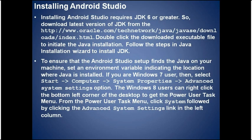Let us learn to install Android Studio. Installing Android Studio requires JDK 6 or greater, so download the latest version of JDK from the oracle.com site. Double-click the downloaded executable file to initiate the Java installation and follow the steps in the Java installation wizard. To ensure Android Studio setup finds Java on your machine, set a system variable that points to the folder where Java is installed.